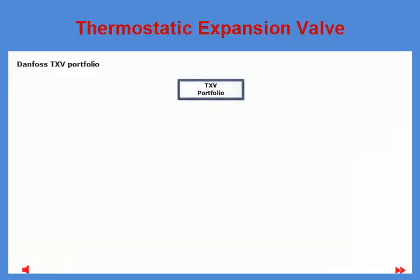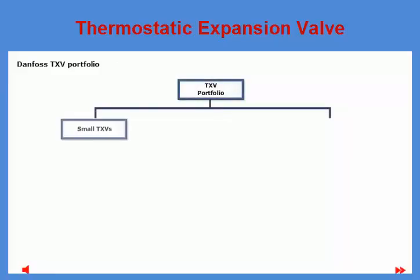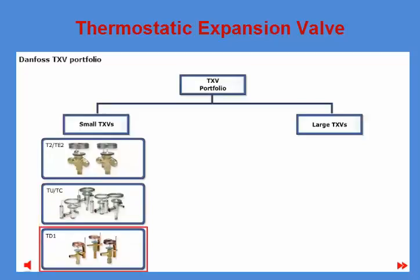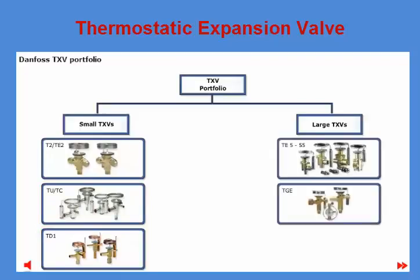The TXV portfolio consists of three different families of valves: small TXVs and large TXVs. The small TXV valves, used for refrigeration units with a power rating of up to 26.5 kilowatts, consist of T2, TE2, TU, TC, and TD1 valves. The large TXV valves, used for units with a power rating above 26.5 kilowatts, consist of TE5255 and TGE valves. In addition, two large TXVs — PHT and TRE80 — are available, although both are scheduled to be discontinued in one or two years' time.